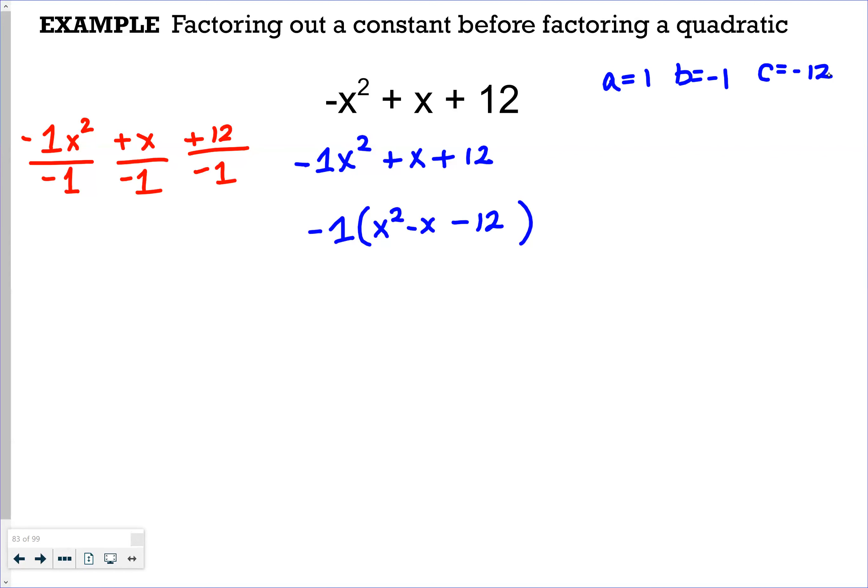And so when I think about, okay, 1 times -12 is -12. So I want to consider what can I multiply together to give me -12 but would add to be -1.